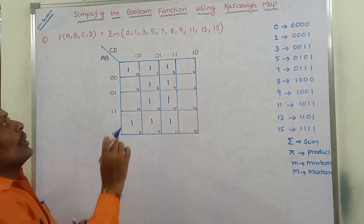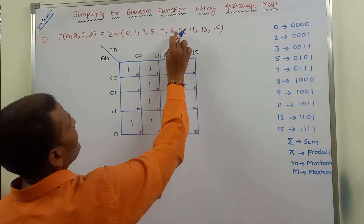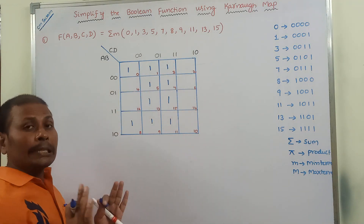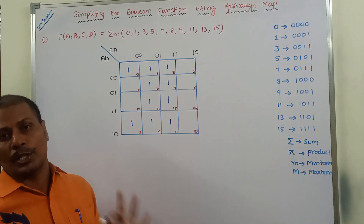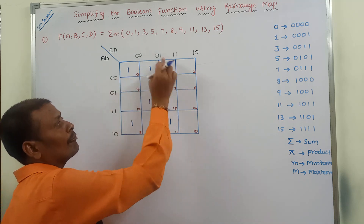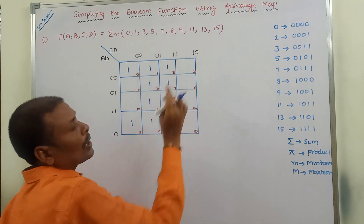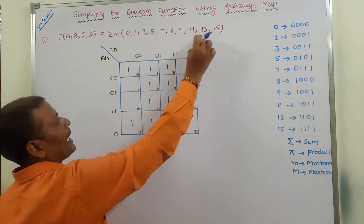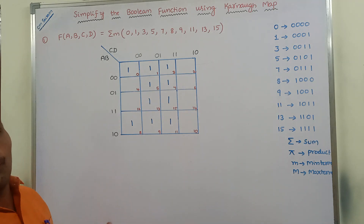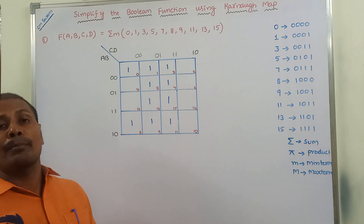Count how many minterms there are: 1, 2, 3, 4, 5, 6, 7, 8, 9, 10. So here we are getting 10 ones. We must check that this is correct — there are 10 minterms and 10 ones, so both are matched. There is no problem. Otherwise, we would have to check whether any minterm was missed.